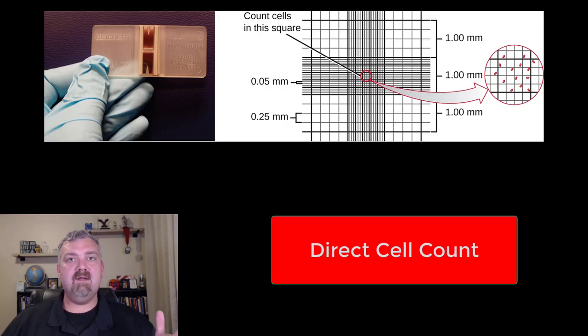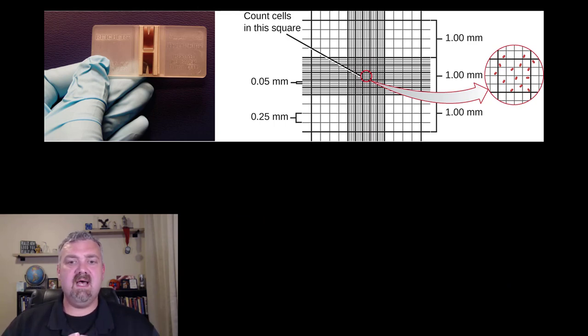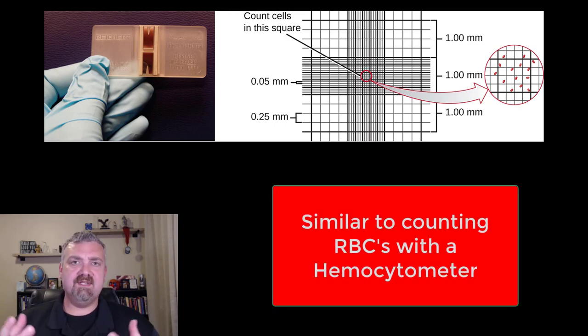Here is just a direct cell count. So the simplest way to count bacteria is to actually count them. This reminds me a lot with my clinical background of the hemocytometers, how you can actually do the same thing with measuring blood. Like how do you count how many blood cells somebody has when they have millions of them in a microliter of blood? Well you use a special device on a microscope and you only count a very small area and then you extrapolate from that to determine the number.